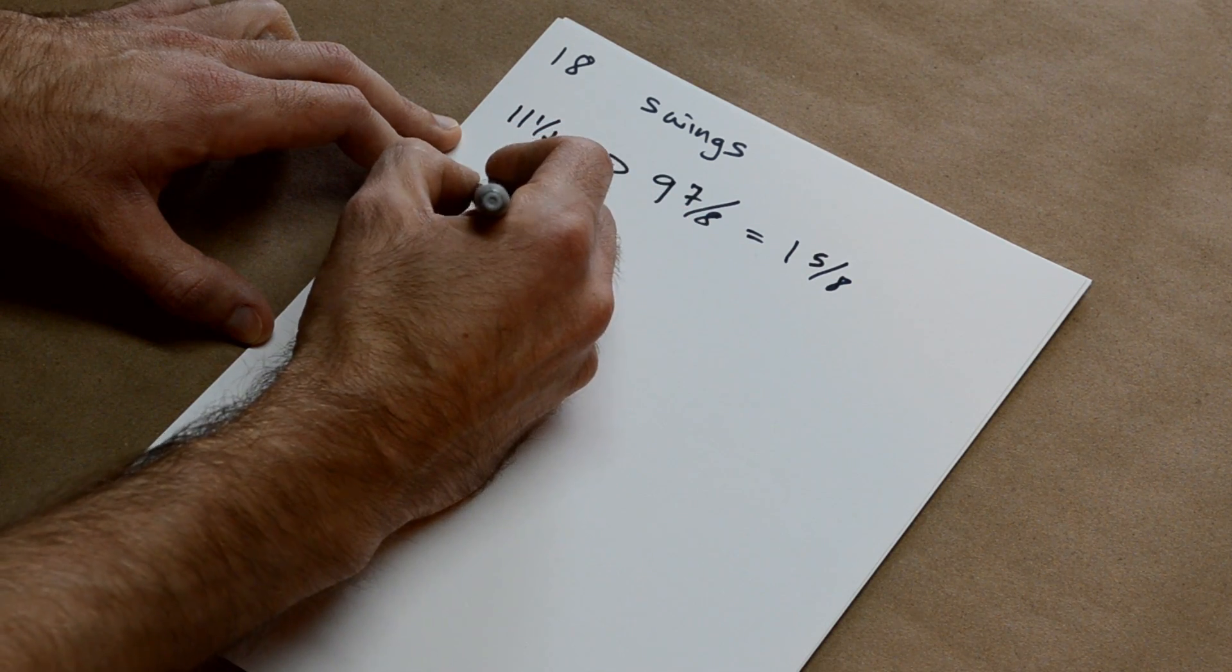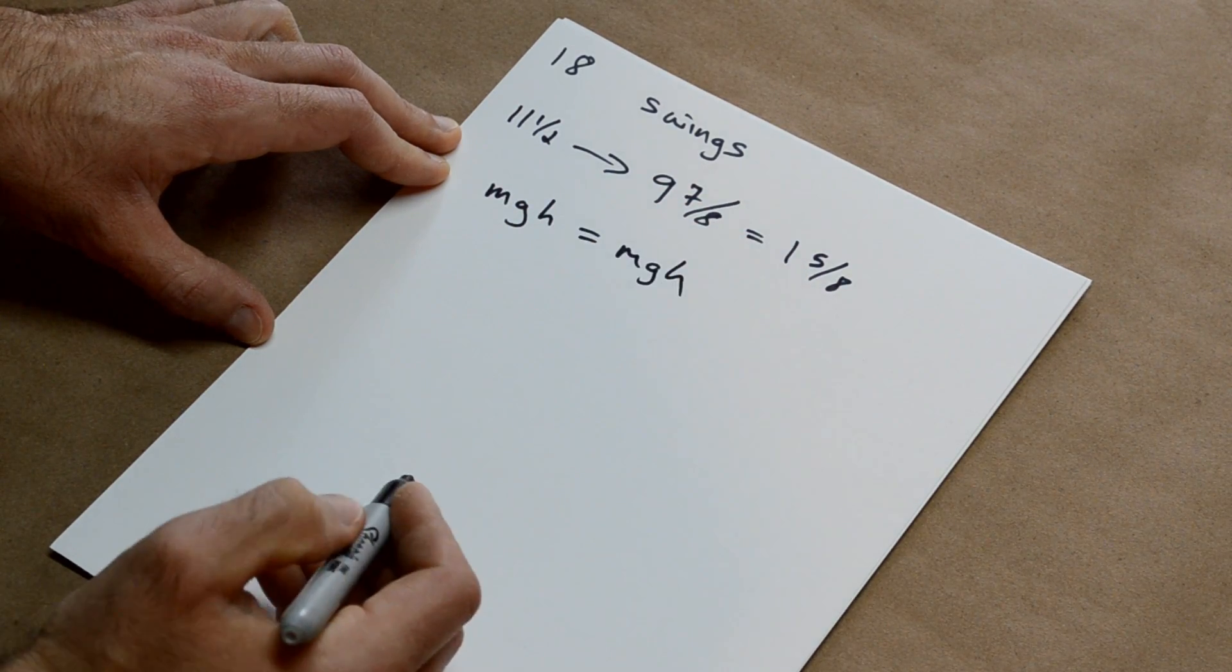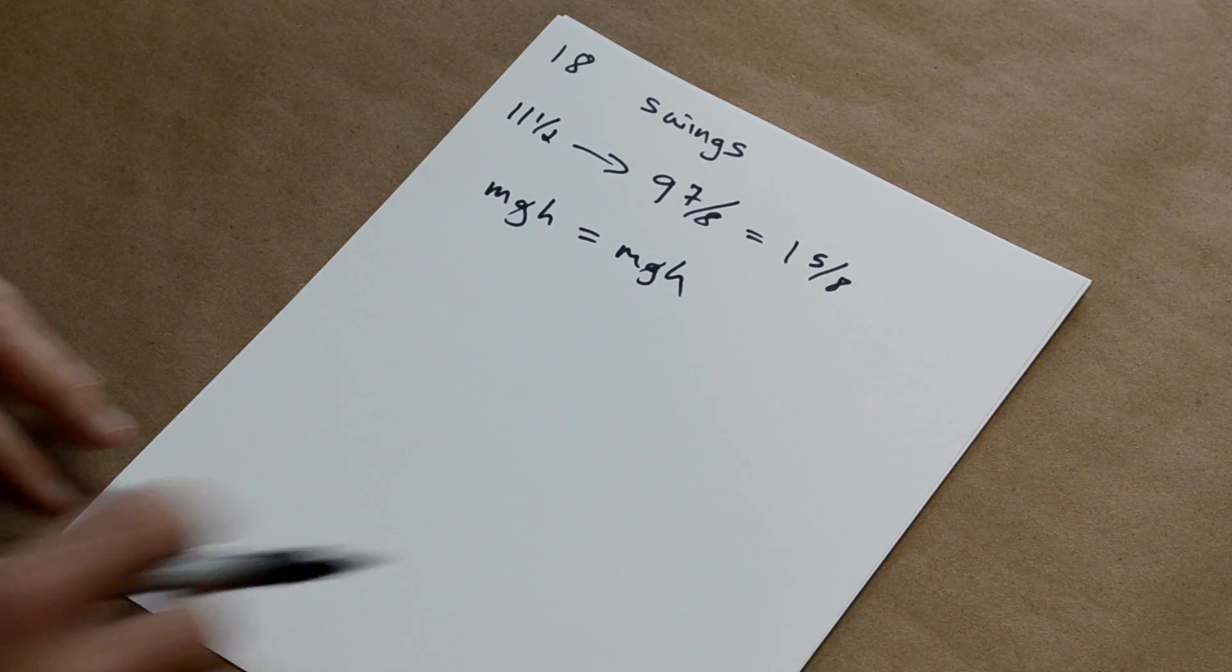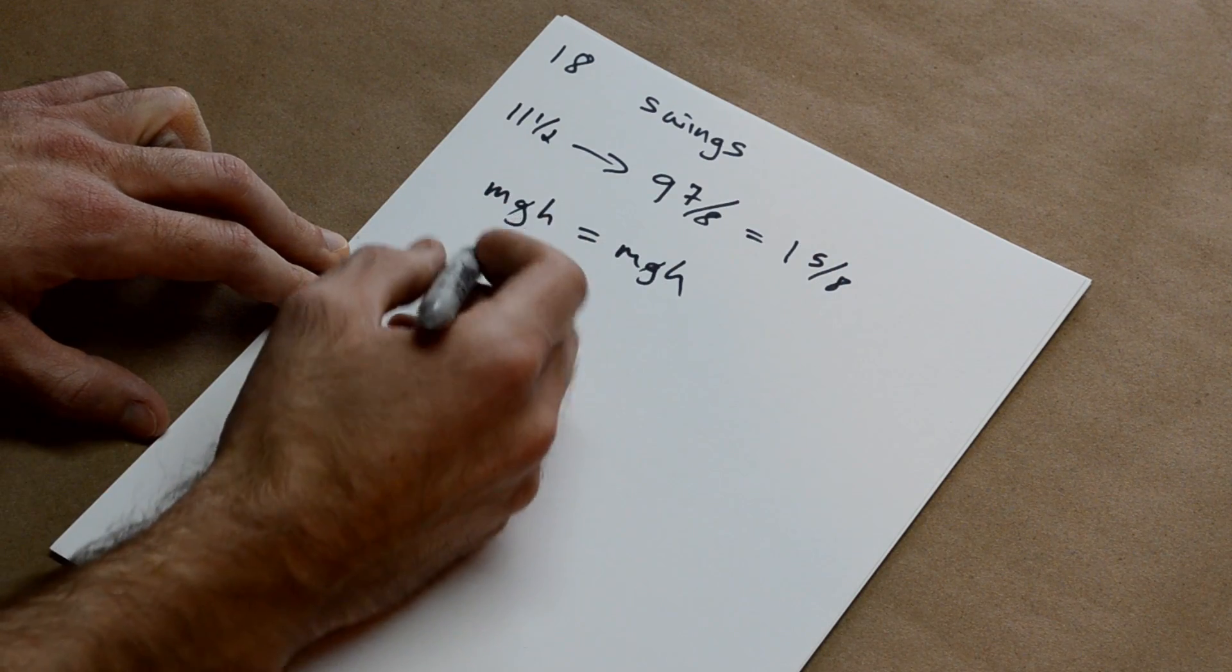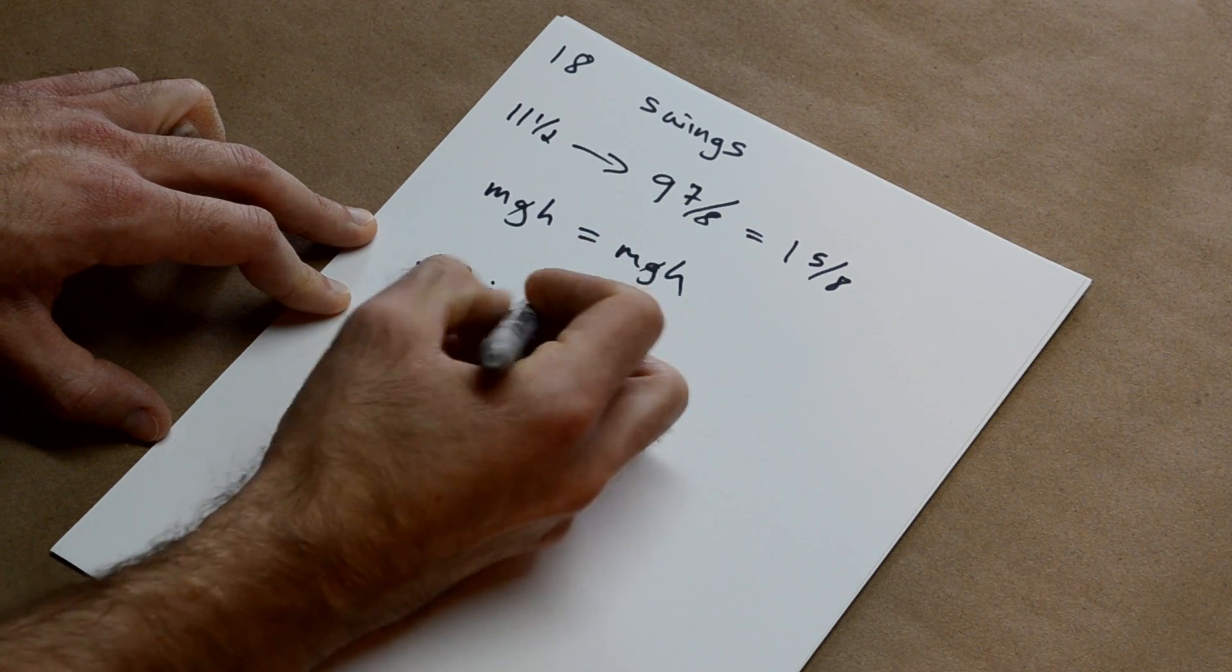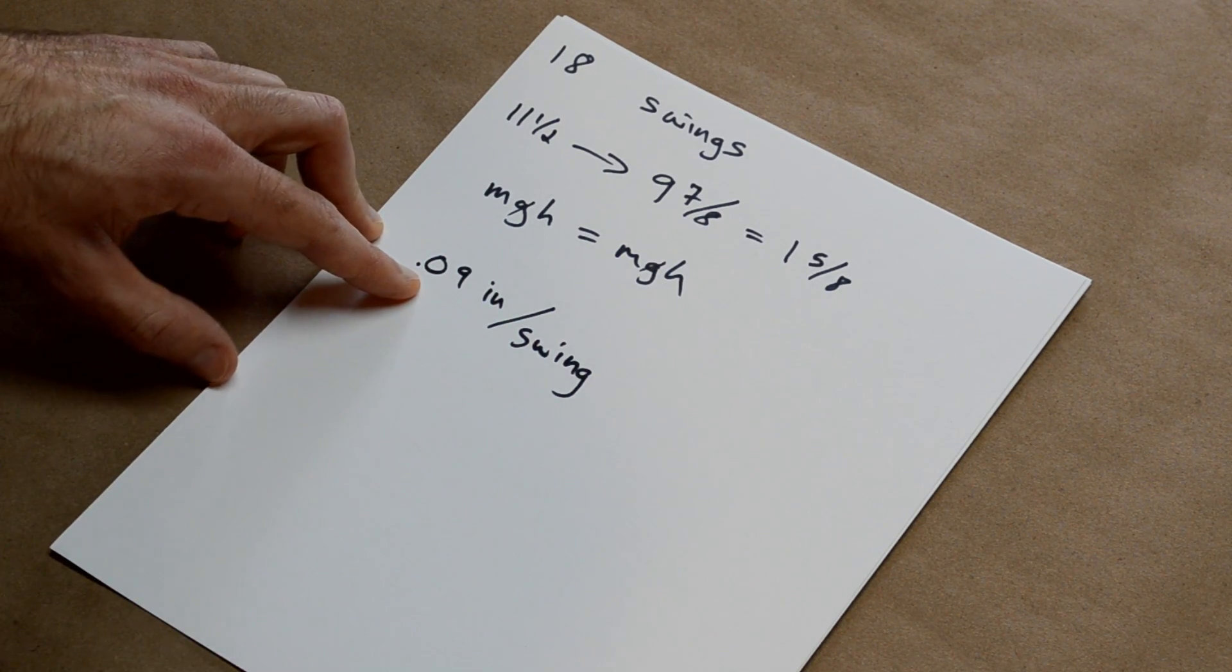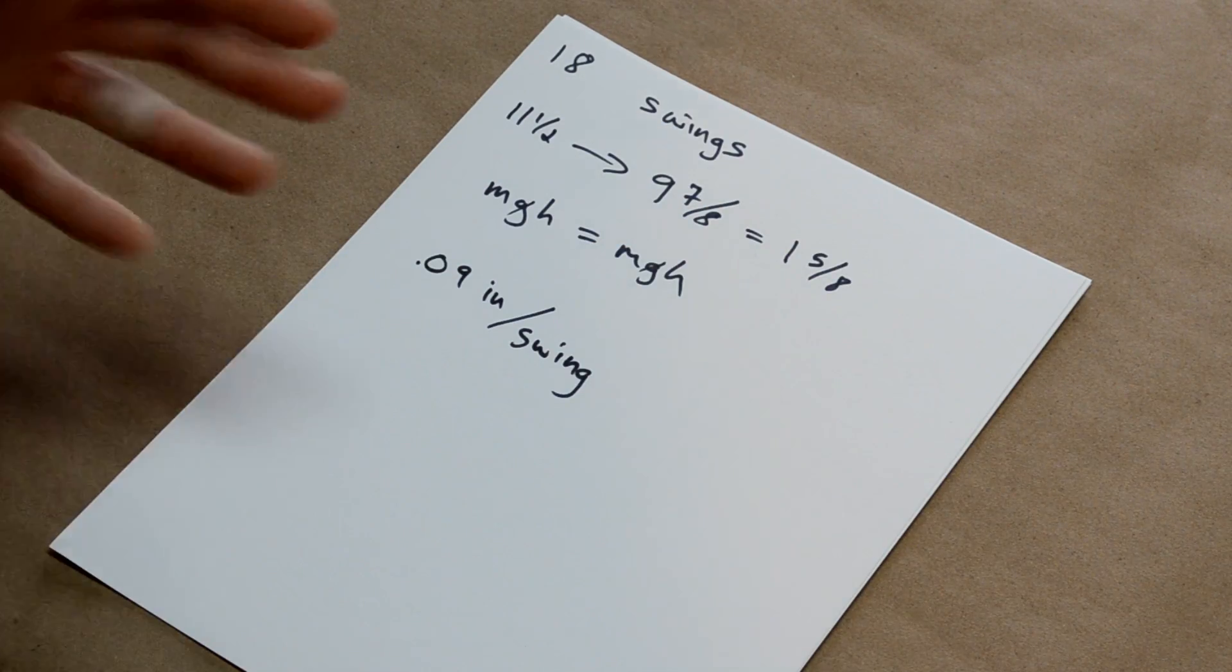And what we're going to do here is compare our potential energy. And since it's MGH to MGH, we're going to drop the G, because it's on both sides of the equation, and just use mass times height, or weight, since it's pounds. So we've got this inch and five eighths and the eighteen swings. We're going to divide those, this divided by that, and we're going to get .09 inches per swing. That's how much height was lost, on average, during that pendulum distance, which seemed reasonable for a cradle.